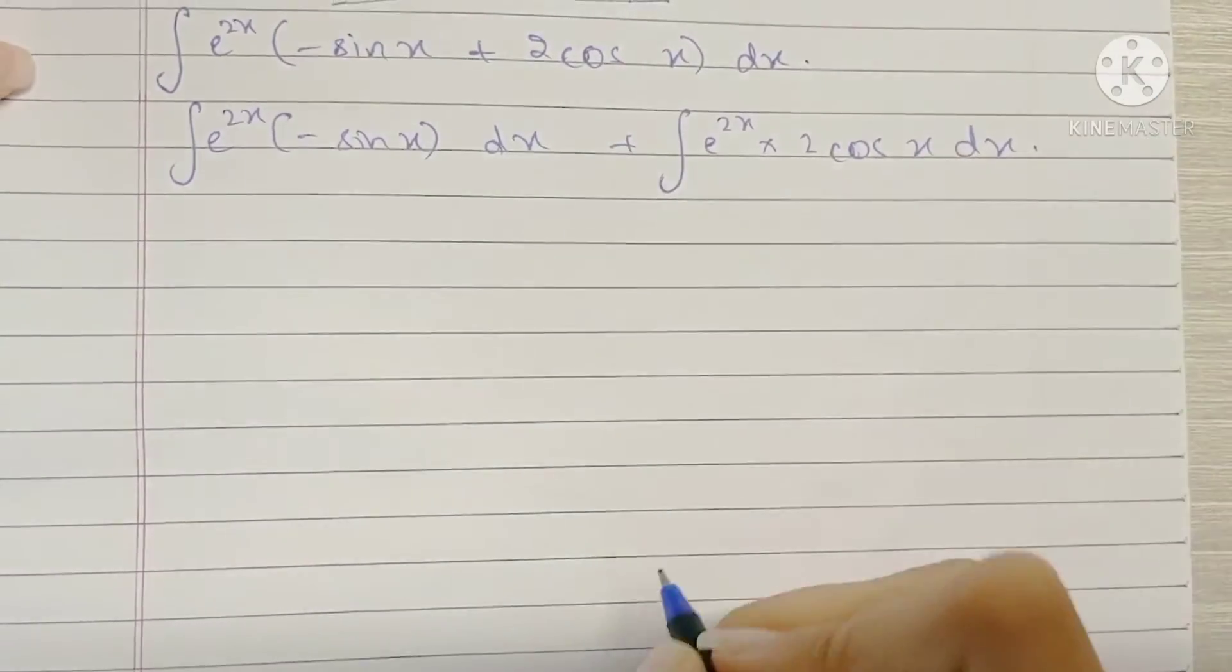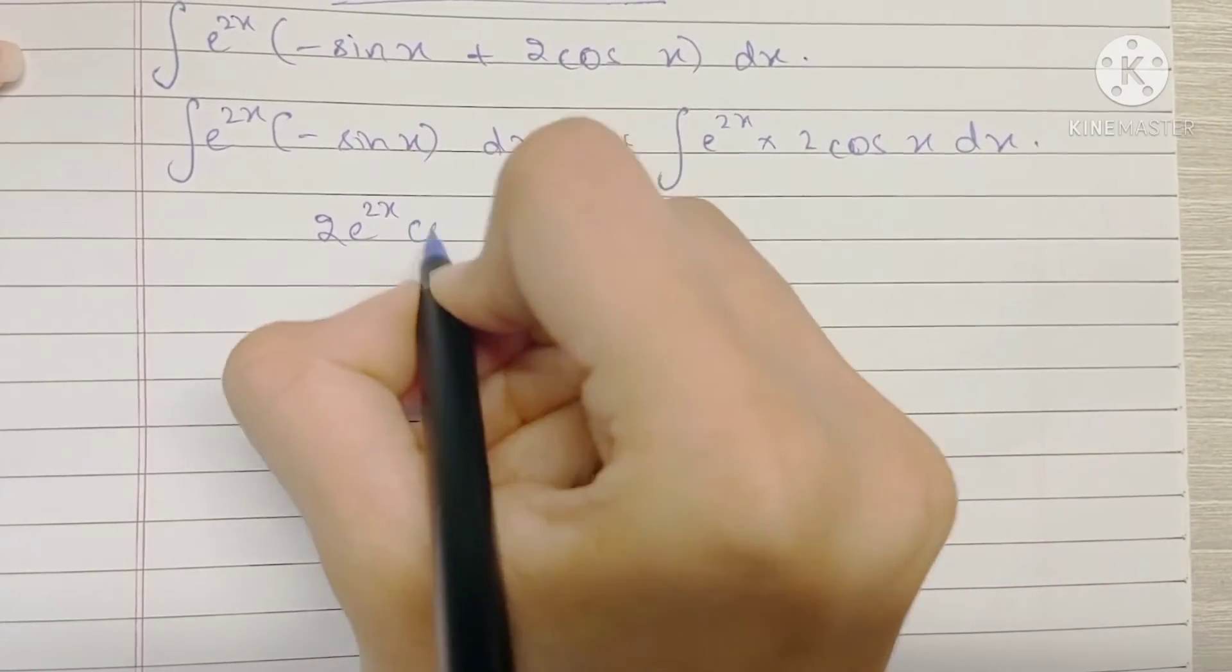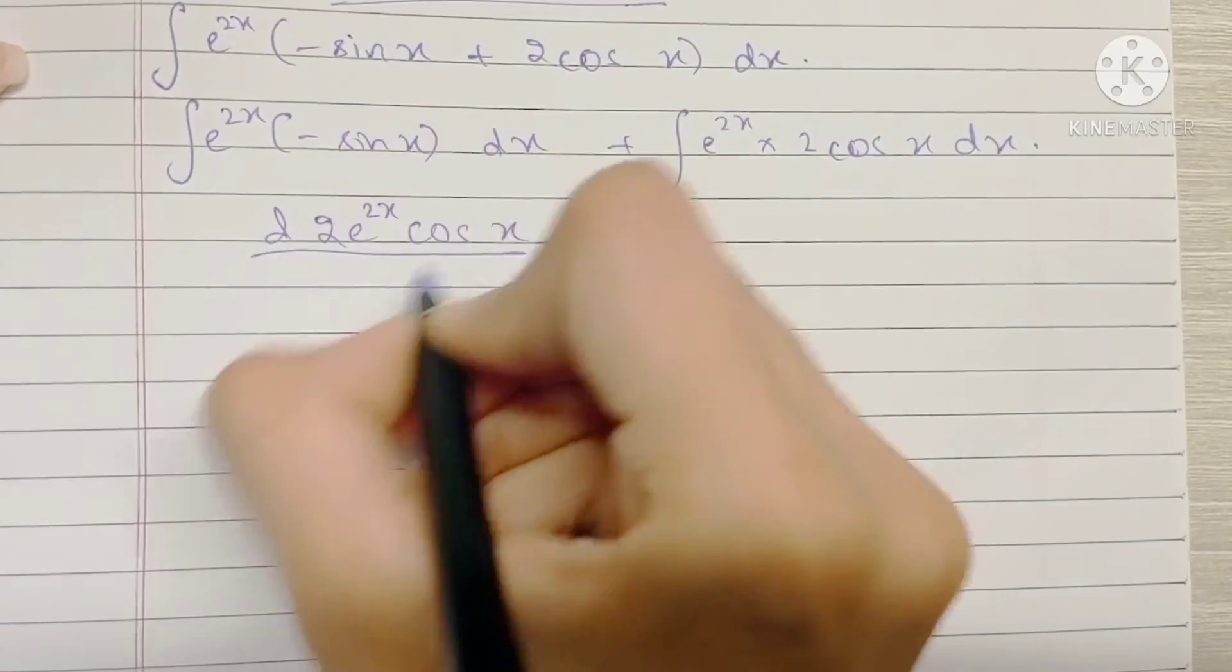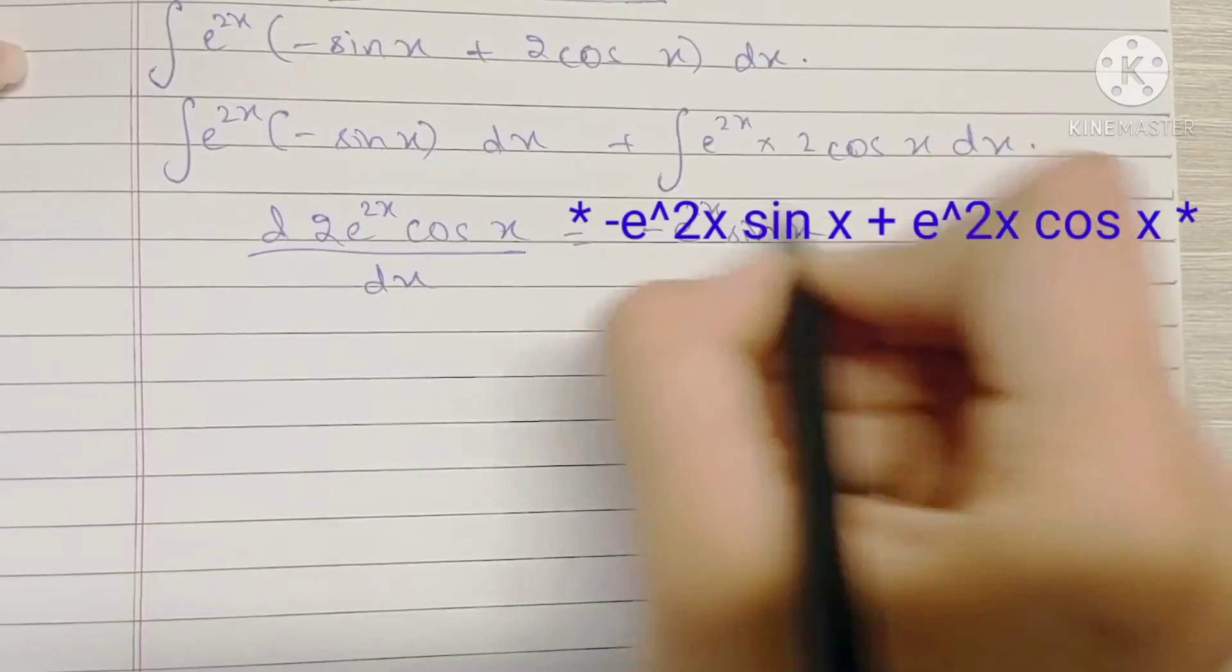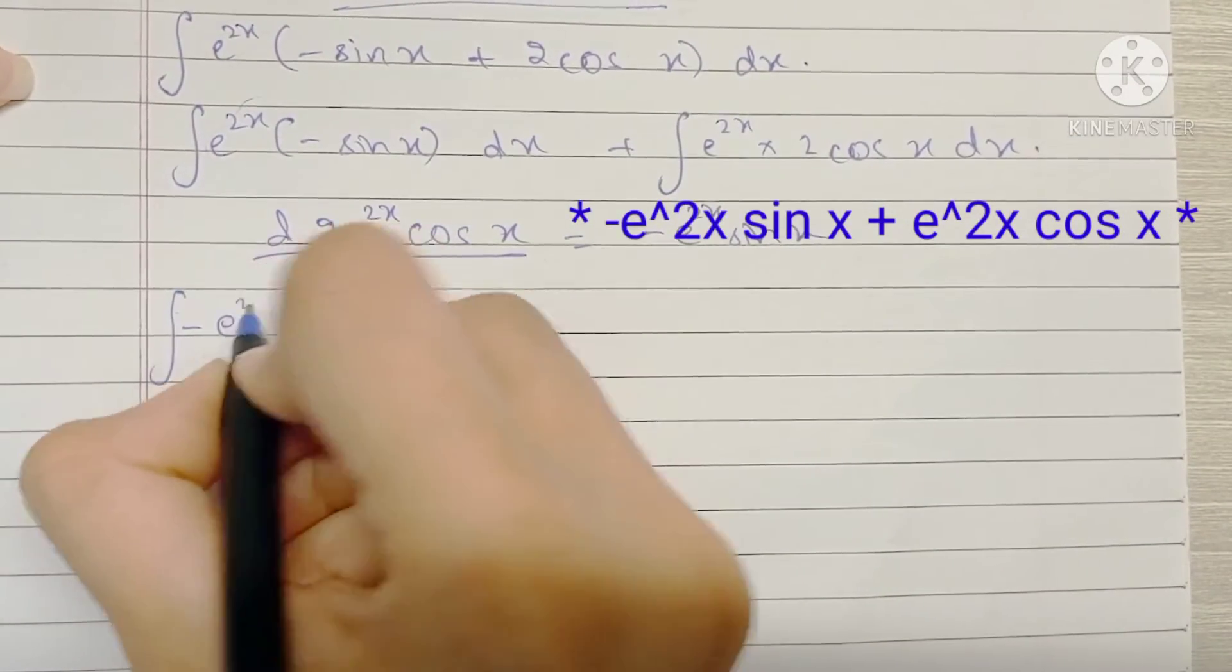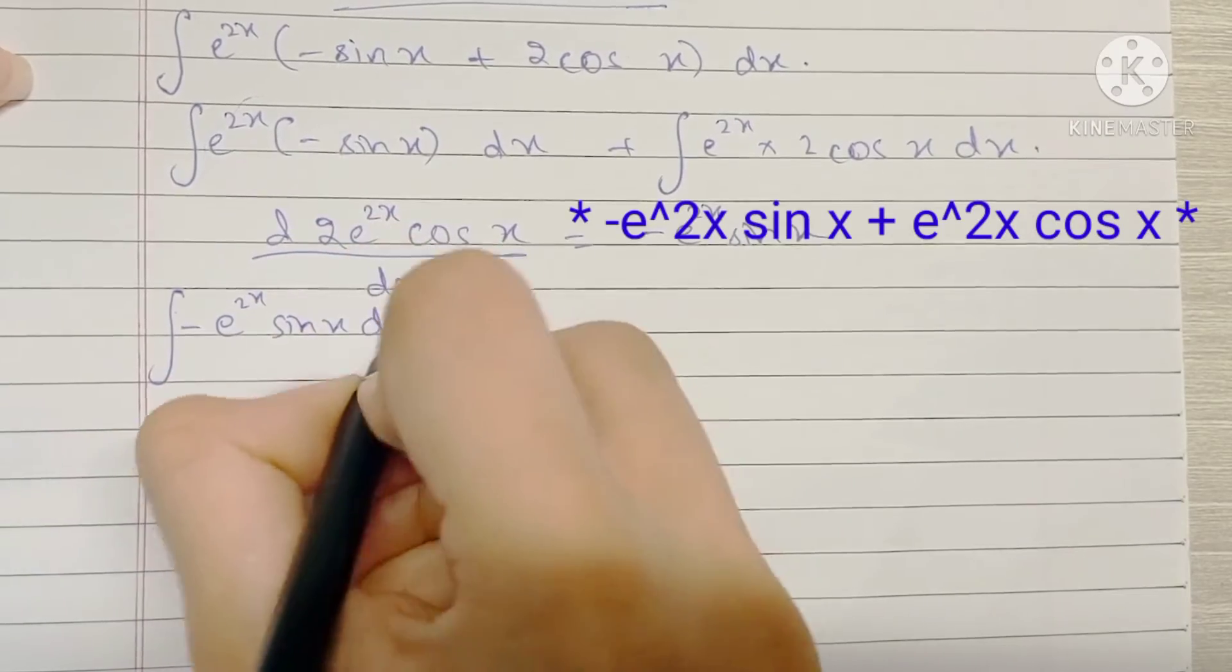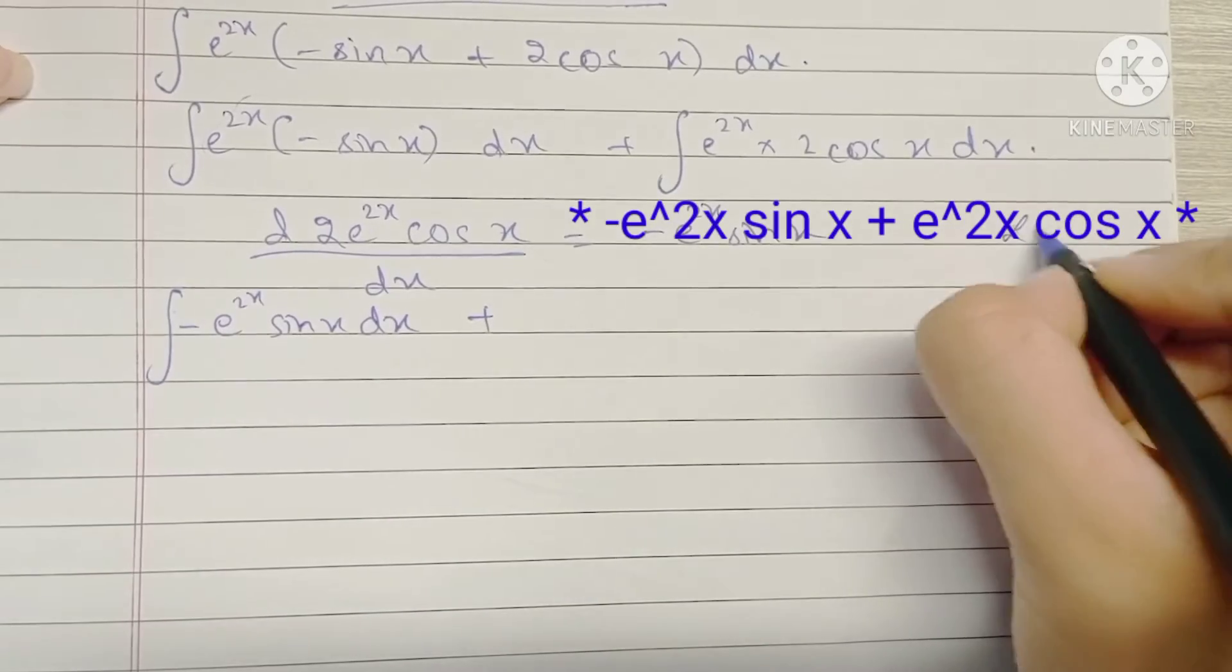Now one thing that you should observe is that the differentiation of 2 e raised to 2x cos x would be minus e raised to 2x sin x, which is this term right here. So we're going to place this term as it is minus e raised to 2x sin x dx and we're going to solve this integral by parts using the LIATE rule.